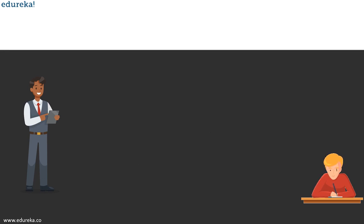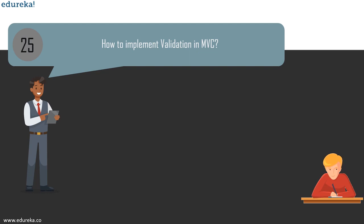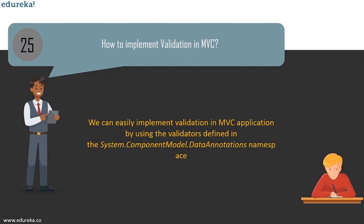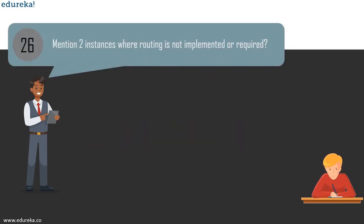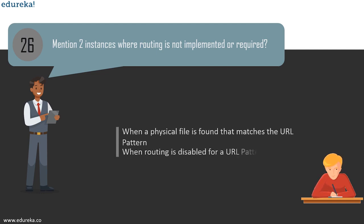The next question is: how to implement validation in MVC? We can easily implement validation in MVC by using validators defined in the System.ComponentModel.DataAnnotations namespace. There are different types of validators like Required, DataType, Range, and StringLength. The two instances where routing is not implemented or required are: when a physical file is found that matches the URL pattern, and when routing is disabled for a URL pattern.